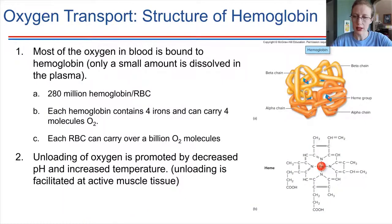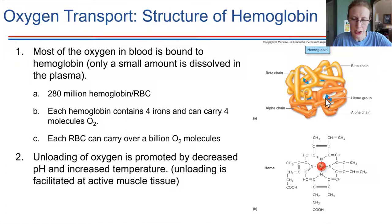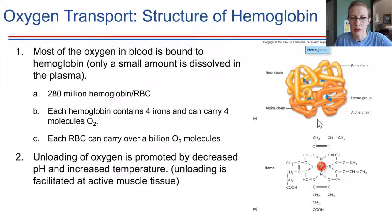Oxygen transport happens primarily through the action of binding to hemoglobin. Hemoglobin is a molecule that is present in red blood cells — there's a lot of it present. Each hemoglobin molecule has four irons, as you can just make out in this picture, and each hemoglobin molecule can carry four molecules of oxygen. There are 280 million of these per red blood cell.